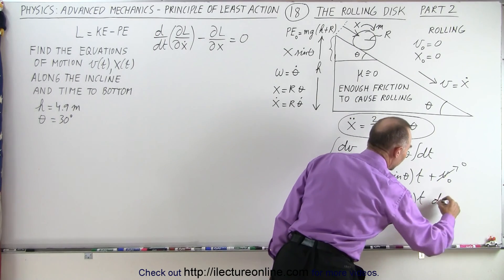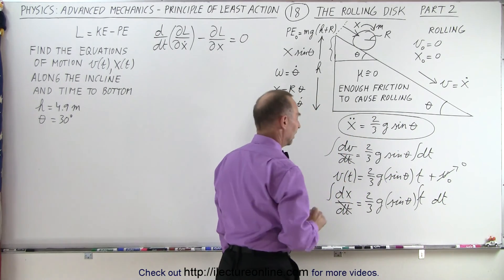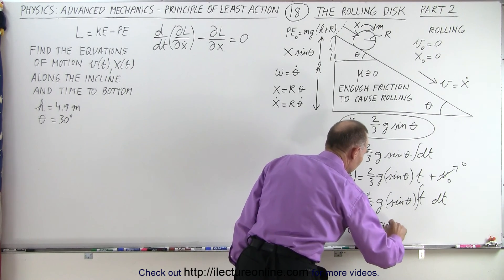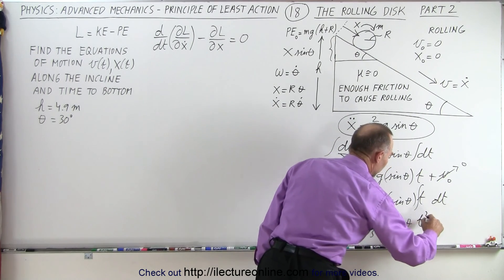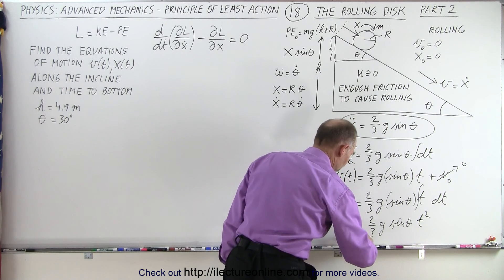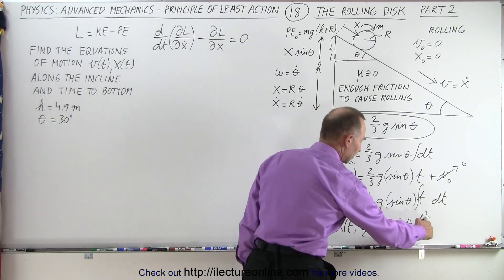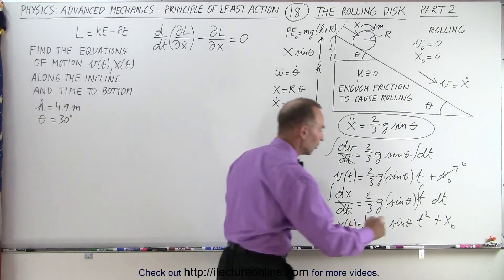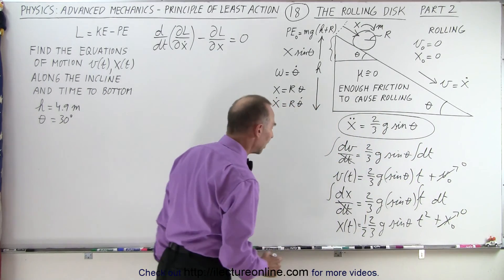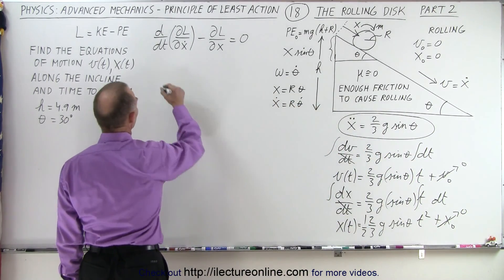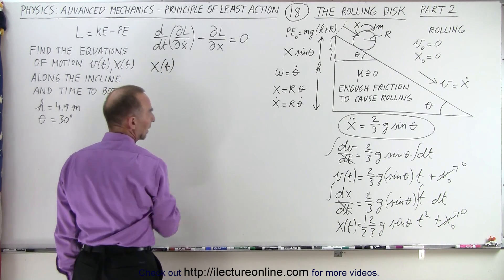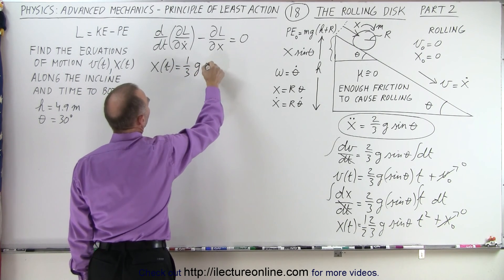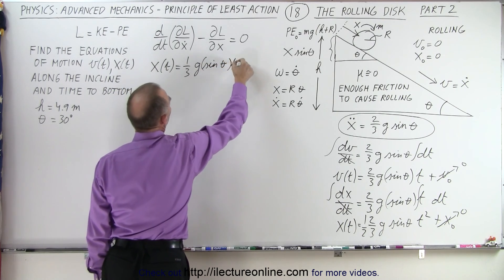The constant of integration is the initial velocity v-initial, which we assume to be zero. Next, we write velocity as dx/dt, where x is the variable along the incline, so dx/dt equals 2/3 g times sine of theta times t. Integrating both sides again gives x as a function of time equal to 2/3 g sine of theta times t squared divided by 2, plus x-sub-zero. Since x-sub-zero is also zero, the twos cancel, giving x(t) = 1/3 g sine of theta times t squared.